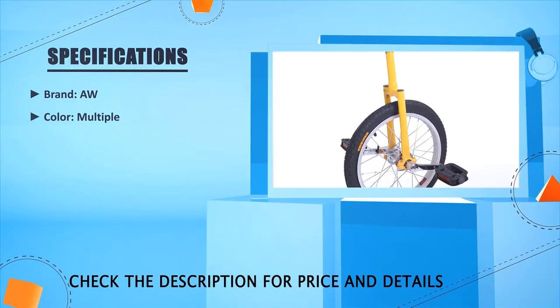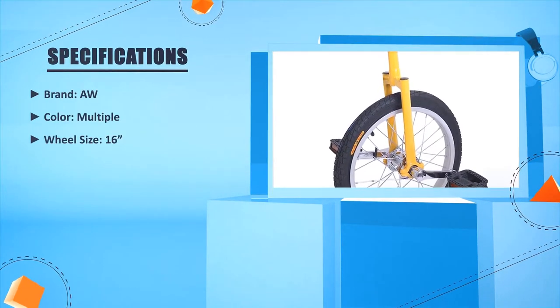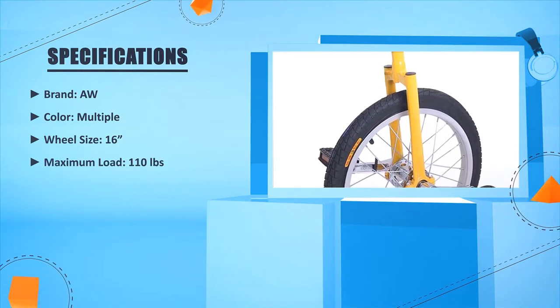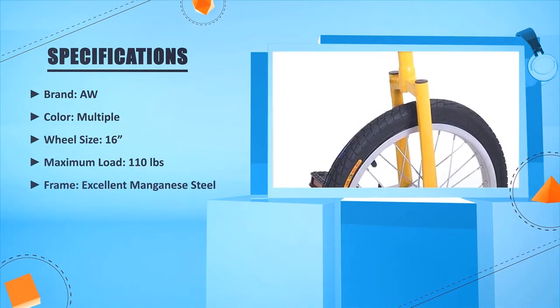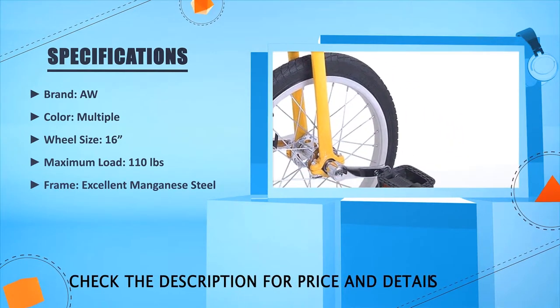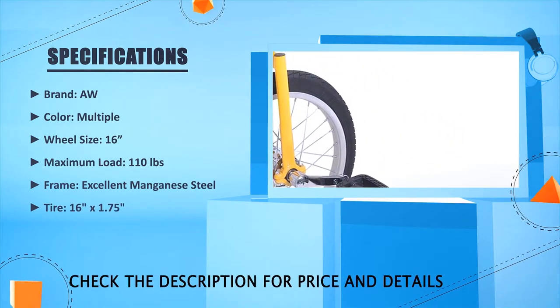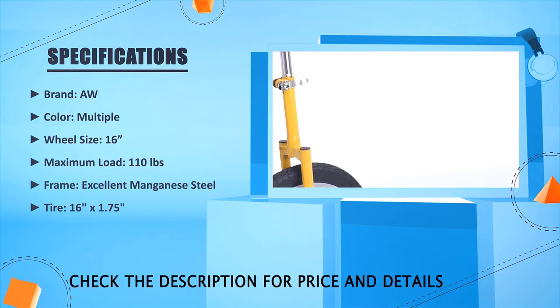Brand: AW. Color: multiple. Wheel size: 16 inches. Maximum load: 110 pounds. Excellent manganese steel. Tire: 16 inches x 1.75 inches.